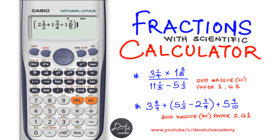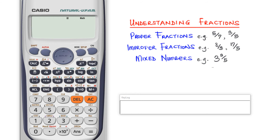Before we go ahead, we need to understand the three types of fractions so we can see how to put them into the scientific calculator. The three types include proper fractions, in which the numerator (the number on top) is less than the denominator (the number at the base). For example, five over seven and three over five.